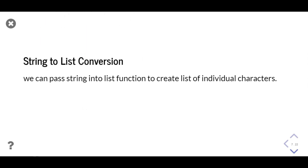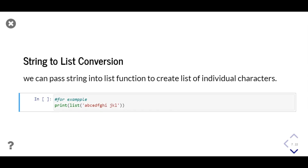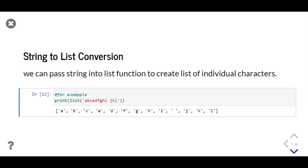If we want to convert a string to a list such that each character becomes one element, we can pass that string into the list method. In this example we pass a string into the list method and print it, and as output we get a list of all the characters present in the string.